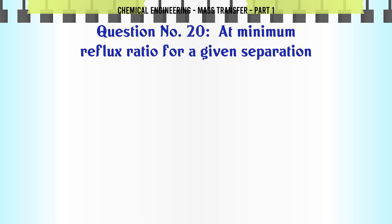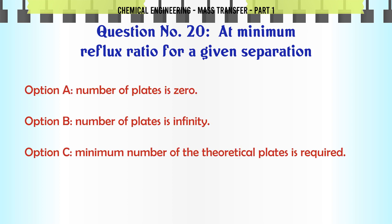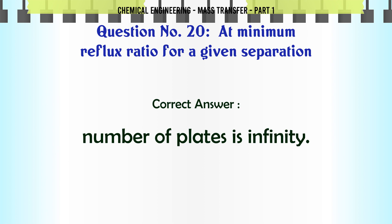At minimum reflux ratio for a given separation: A. Number of plates is zero. B. Number of plates is infinity. C. Minimum number of theoretical plates is required. D. Separation is most efficient. The correct answer is Number of plates is infinity.